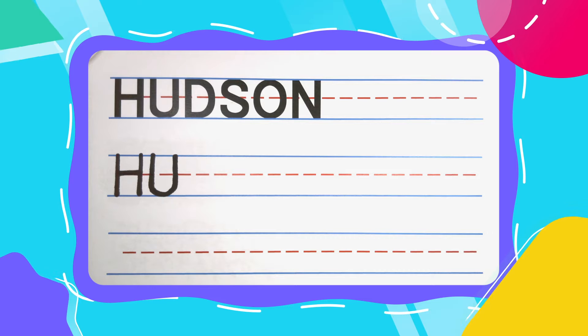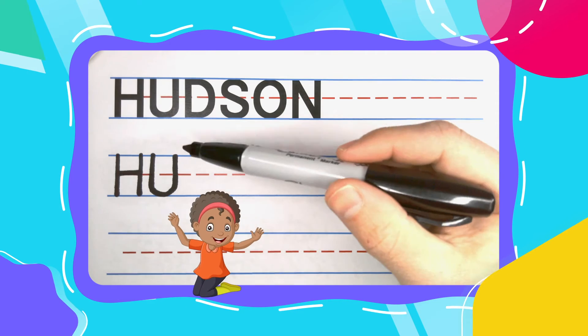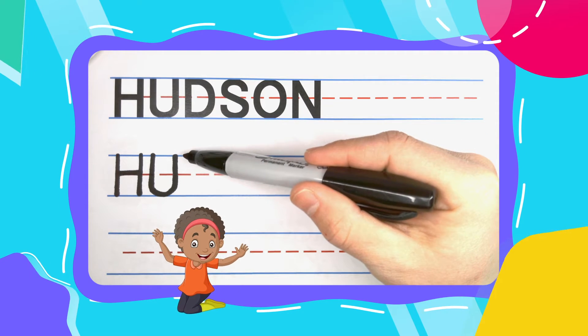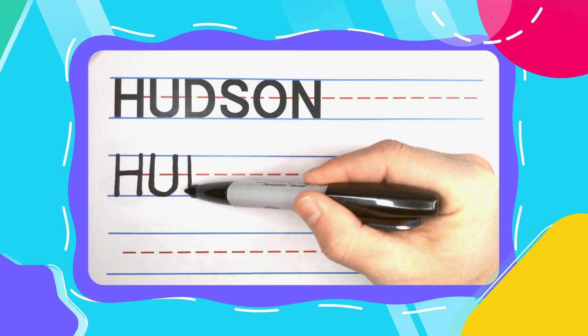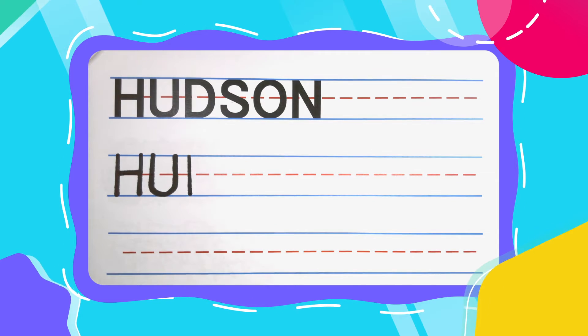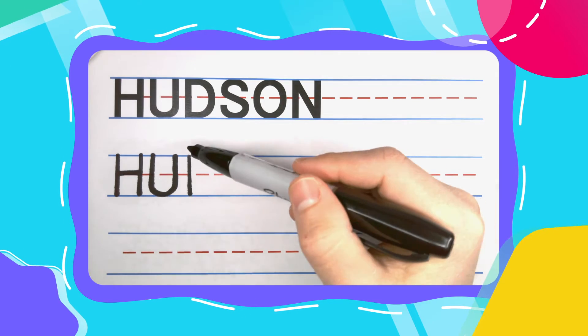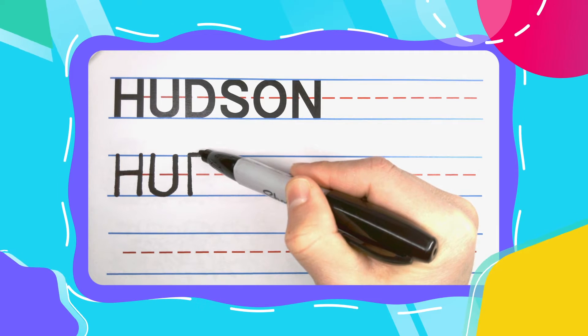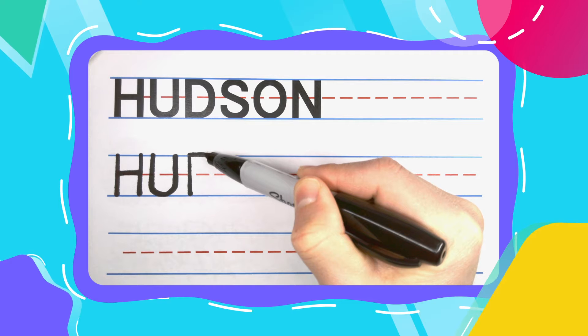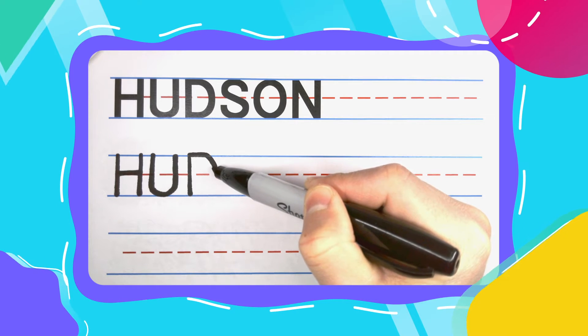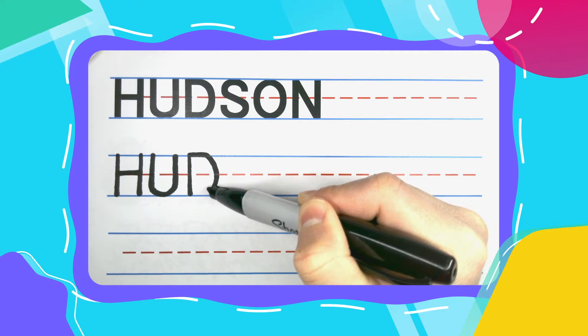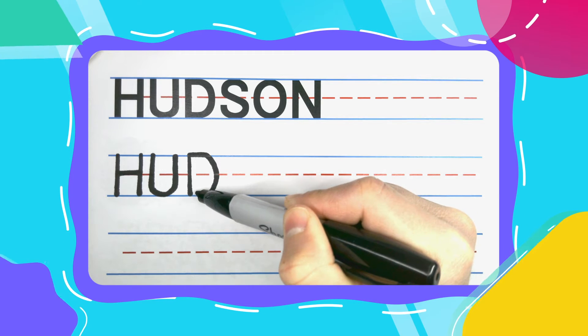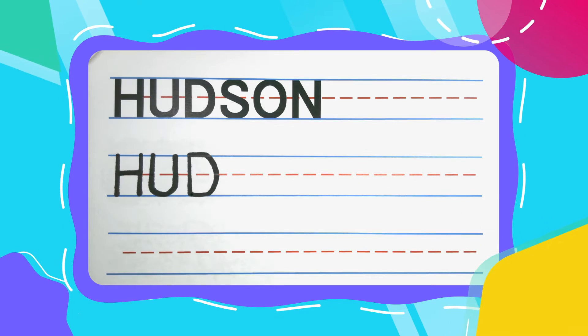The next letter is the dancing D. Dancing Ds are fun to draw, and they start with a straight up and down line. Pick your pen up, come back to the top, and dance your way out to the right. Once you get out a ways, start your curve. You're going to do like a little half circle. And once you reach the bottom, come straight back in for your D.